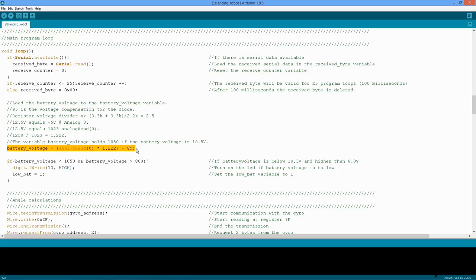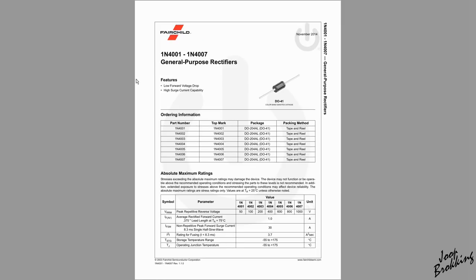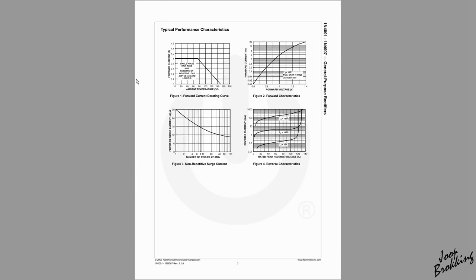This line reads the battery voltage from the analog input 0 and stores it in the battery voltage variable. The analog input of the Arduino can only handle a maximum of 5 volt. The LiPo battery is 12.6 volt when fully charged and will destroy the analog input. That is the reason why there is a voltage divider on the schematic. A current will flow through these resistors, and the voltage will divide itself over the resistors in relation to the resistor values — in this case, 2.5. Now, there is a catch.